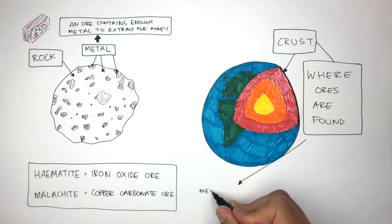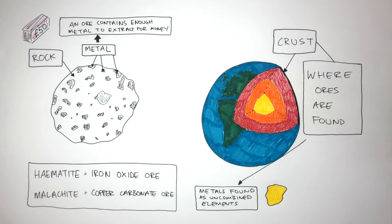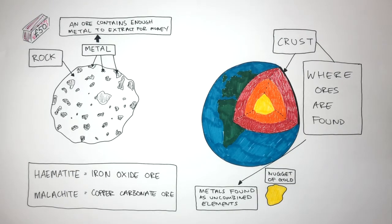Ores can contain metals found as uncombined elements. This diagram represents a nugget of gold, and because gold is an unreactive metal, it is found as an uncombined element by itself. Metals which are found like this are called metals found in their native state. Metals found in their native state are always unreactive metals.